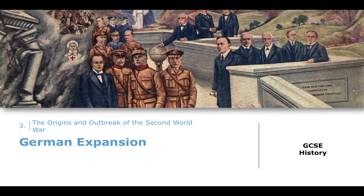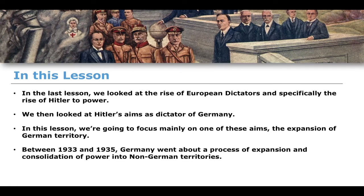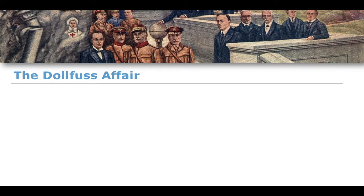In this lesson we're going to talk about how he implements these aims in the early period of his dictatorship. We're going to talk about Austria, the rearmament of the Rhineland, and a couple of other instances. We're going to focus mainly on the expansion of German territory, which ties into all the other aims — going against the Treaty of Versailles, providing Lebensraum for German speakers, and rearmament policies. Between 1933 and 1935, Germany underwent a process of expansion and the consolidation of German power in non-German territories.